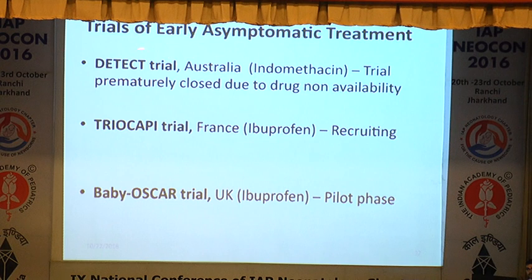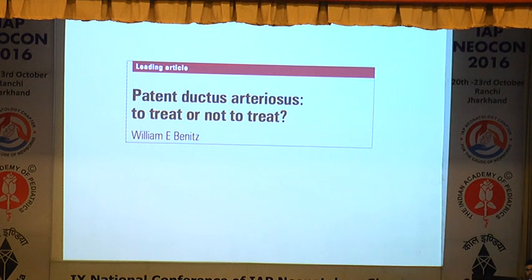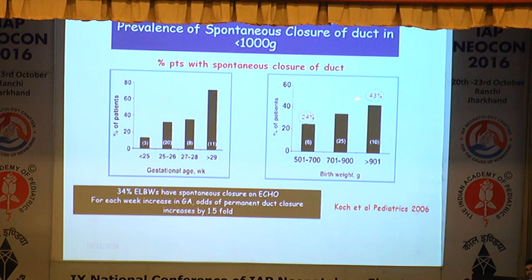There are various trials — the DETEC trial had to stop because indomethacin was not available in Australia, but with 94 recruited babies it showed that an early targeted approach is better. The OSCAR trial is currently ongoing in the UK, and the PROPER trial is also recruiting babies, both studying early symptomatic treatment using functional echocardiography after six hours, before the baby becomes clinically symptomatic. On the other side, people argue not to treat because there is a high rate of spontaneous closure — 24 to 43% of babies less than 30 weeks achieve spontaneous closure.